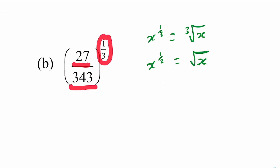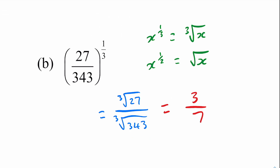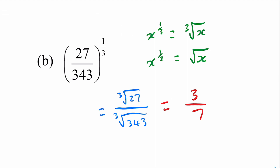Since we've got a fraction inside the bracket, we apply the cube root to both the top and the bottom. We can rewrite the expression as the cube root of 27 divided by the cube root of 343. The cube root of 27 is 3. For 343, working through: 7 cubed is 49 × 7 = 343, so the cube root of 343 is 7. If you don't know a cube root off the top of your head, just work through the ones you do know and keep going until you find it. So the final answer is three sevenths.